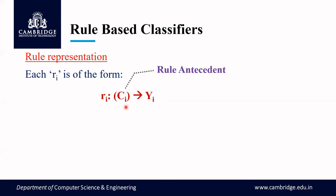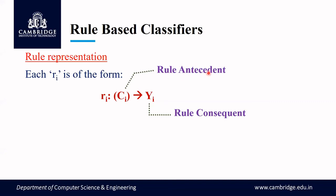The left side of the arrow is called the rule antecedent. Remember this term — throughout this chapter, whenever I use the word antecedent, it refers to the left-hand side part of the rule. The right-hand part is called the rule consequent. So every rule has two parts: rule antecedent and rule consequent. These terms will also be used in the next module on association analysis.